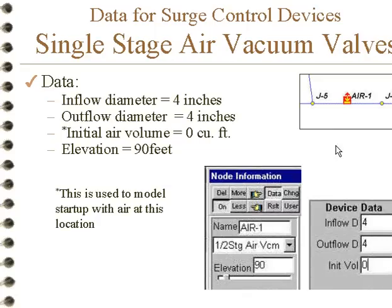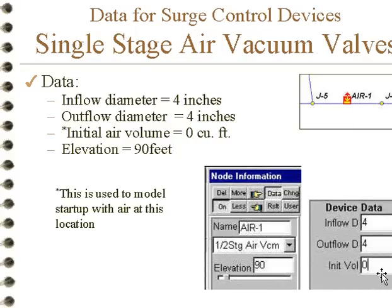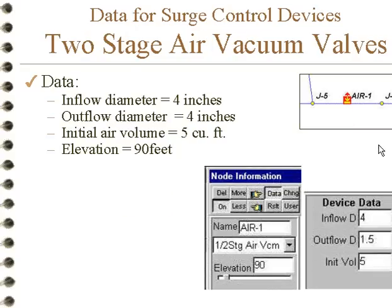We have air vacuum valves. A single-stage air vacuum valve has the same inflow diameter as outflow diameter, and we put in diameters here. The initial volume is zero, and it's used to model a startup condition where there's air trapped at the air vacuum valve — this would be the amount of air. A two-stage air vacuum valve has a different size inflow and outflow orifice to allow the air to escape more slowly and prevent what we call a surge slam due to the water columns coming together too rapidly.